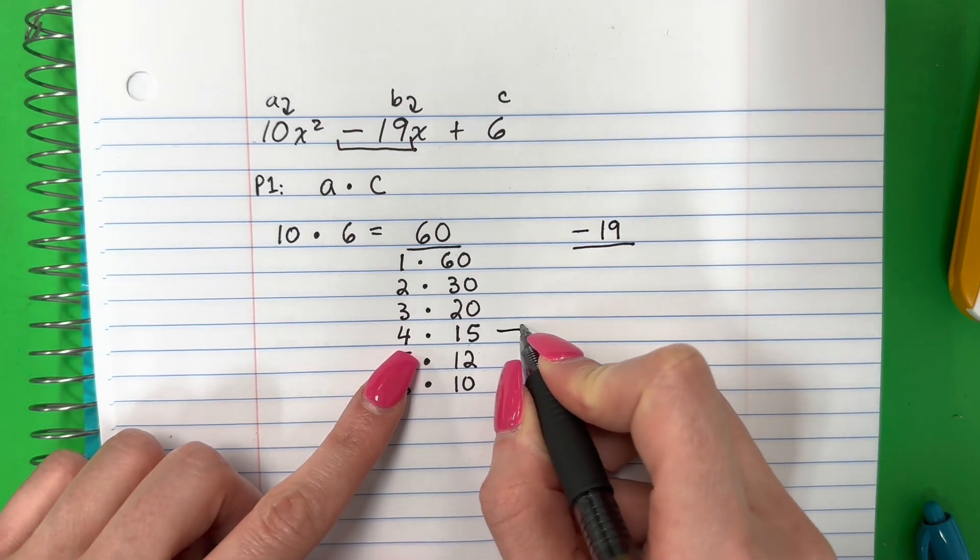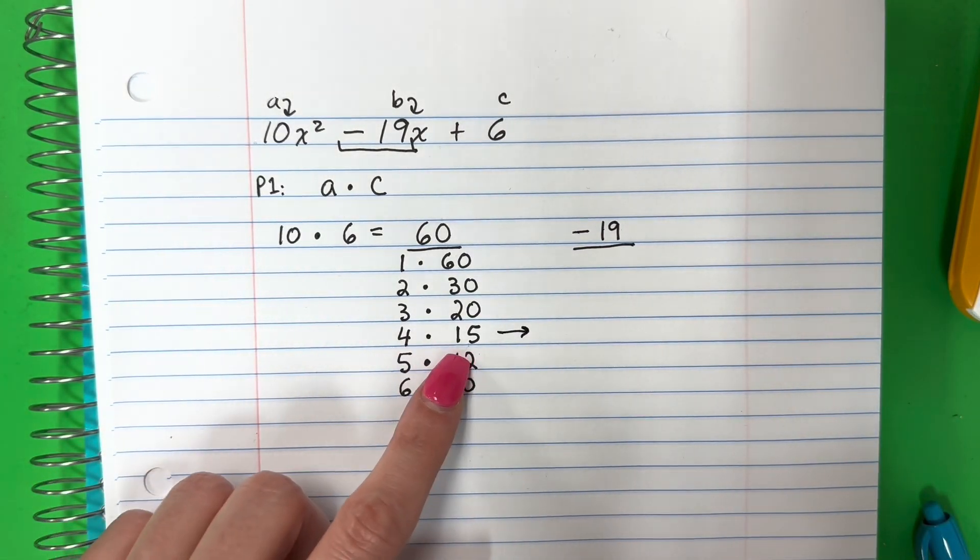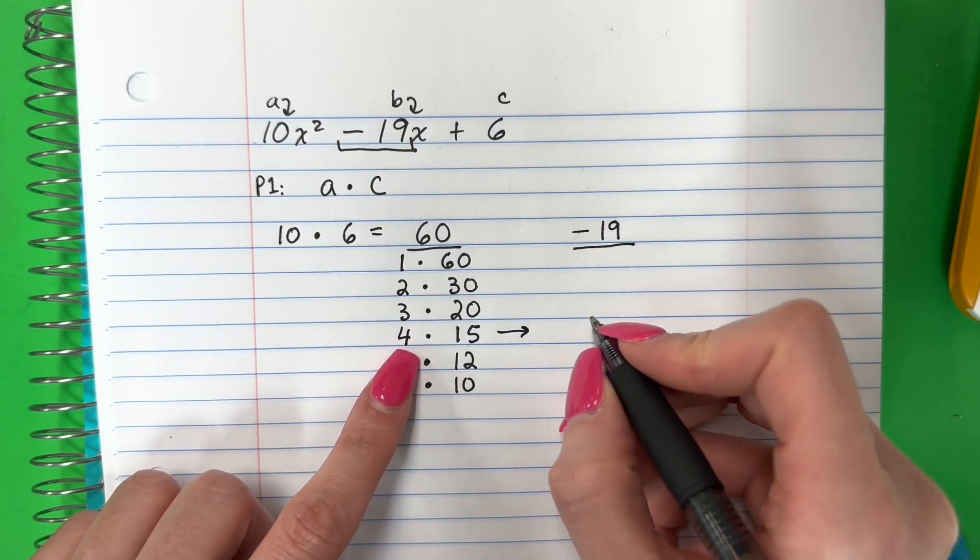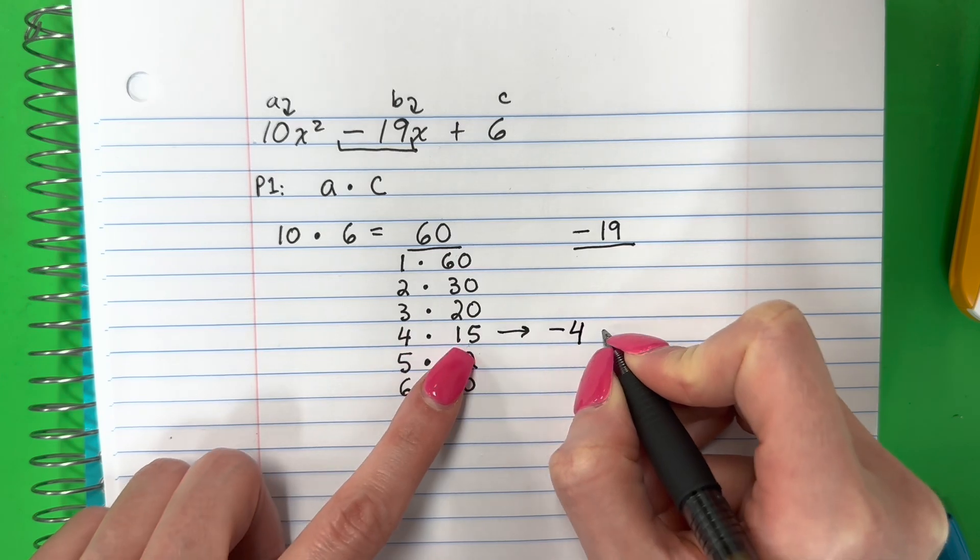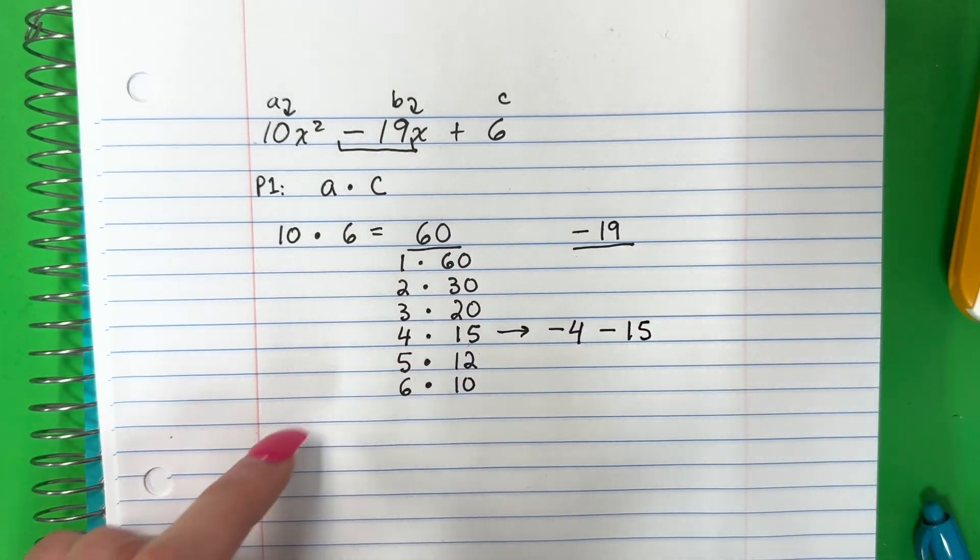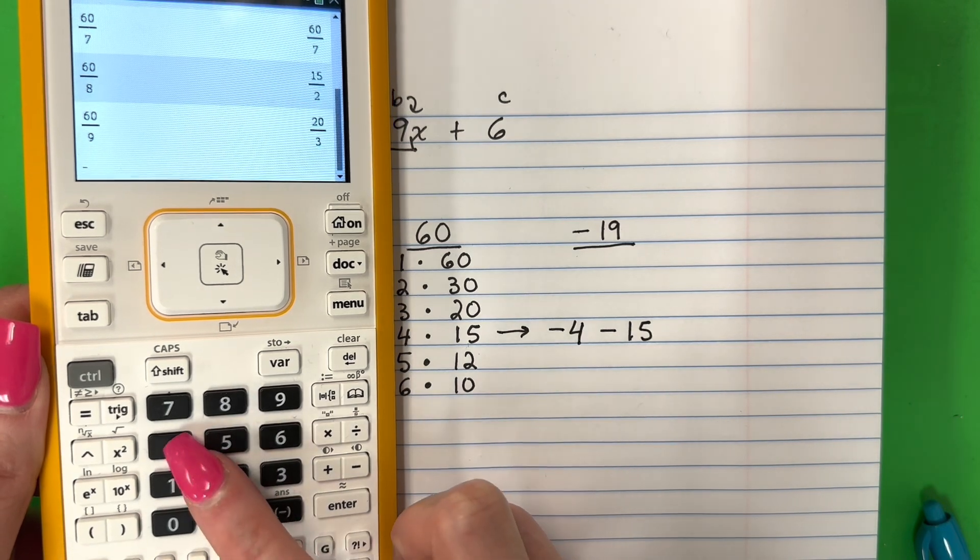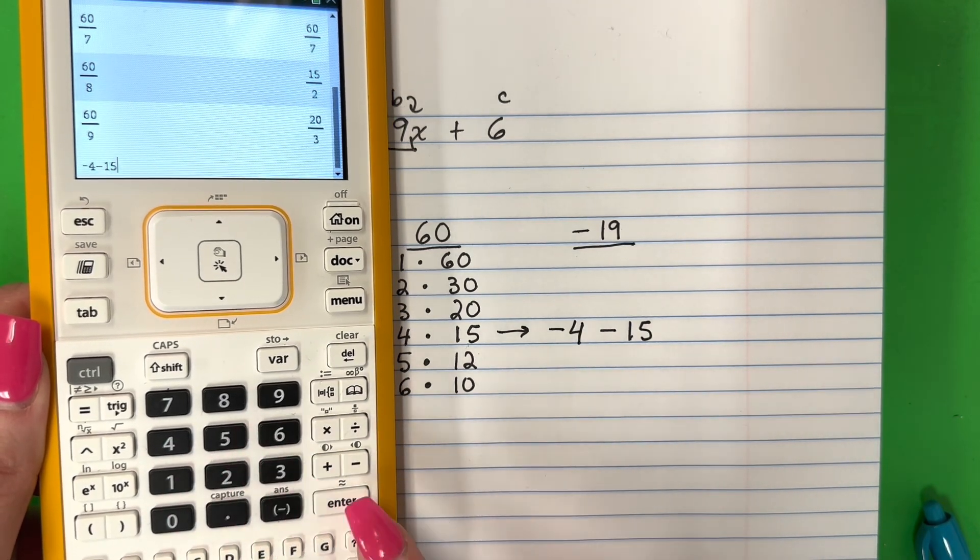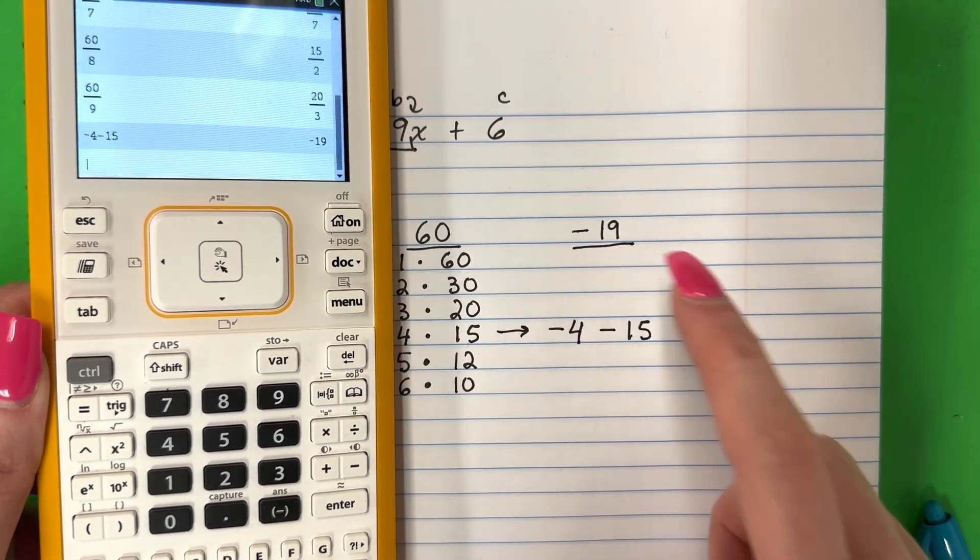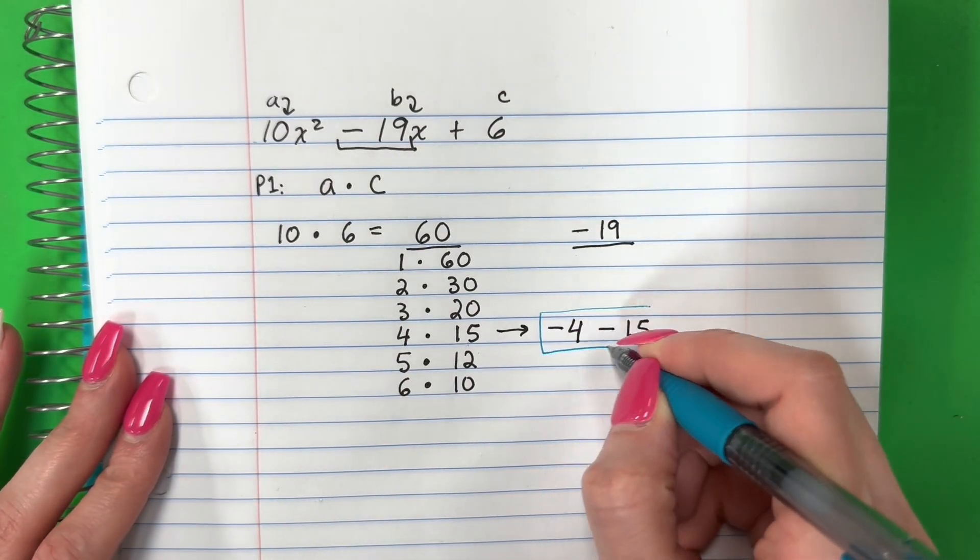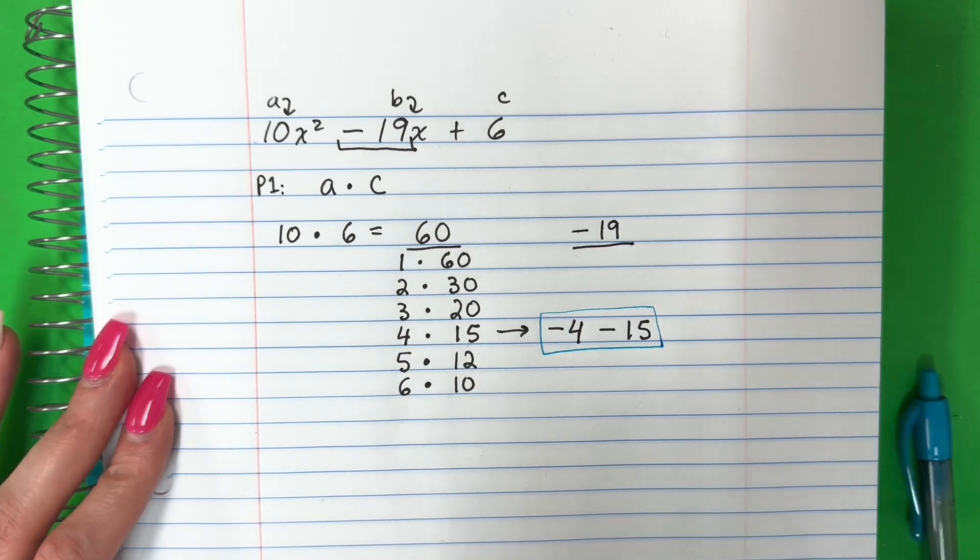So to get negative nineteen, para tener negativo diecinueve, I need to do, necesito hacer negative four minus fifteen. And you can check that in the calculator if you want. Negative four minus fifteen, that is negative nineteen. So this is the pair that I want. Este es el par que quiero.